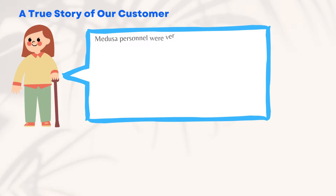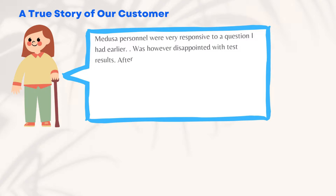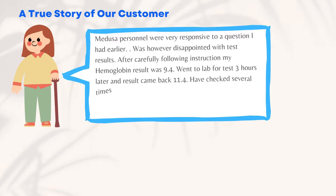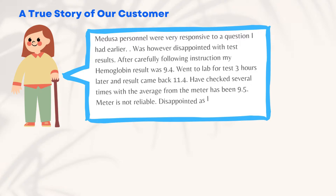Customer review: The support team was very responsive to a question I had. However, I was disappointed with the test results. After carefully following the instructions, my hemoglobin result was 9.4. I went to the lab for a test three hours later and the result came back 11.4. I checked several times and the average from the meter was 9.5. The meter is not reliable — I was disappointed as I thought this would be a good monitor.